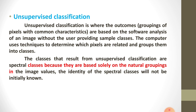Unsupervised classification is where the outcome is the grouping of pixels with common characteristics — homogeneous materials in groups, such as group of trees or group of mango trees. These classifications are based on software analysis of an image without the user providing classes. The computer determines which pixels are related and groups them into classes. The user can specify the algorithm and desired number of output classes. Features like wetlands, developed areas, and coniferous forests are included under unsupervised classification.